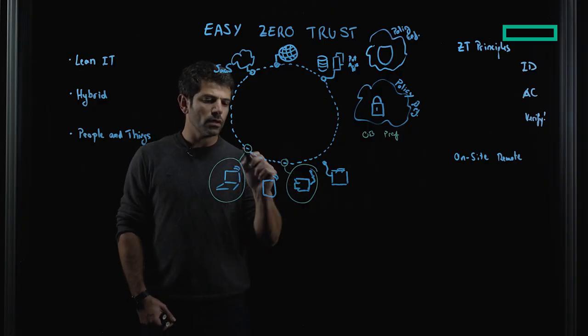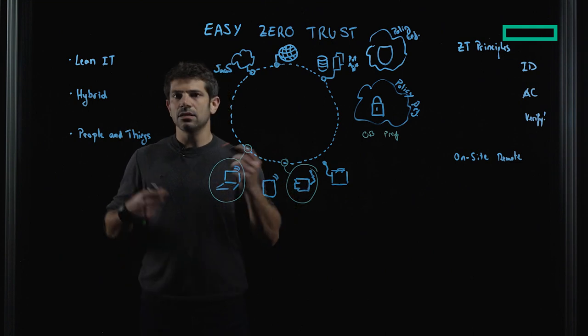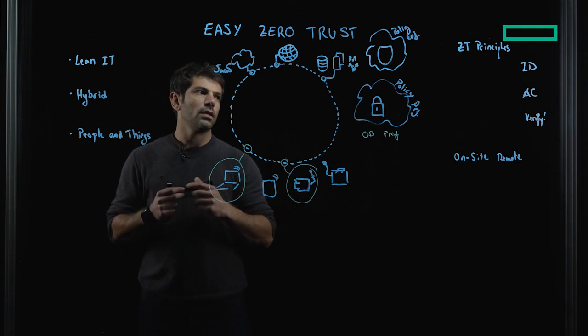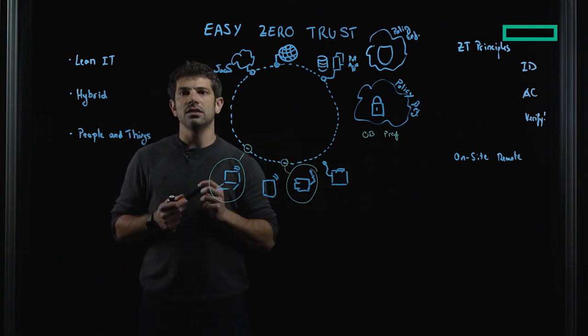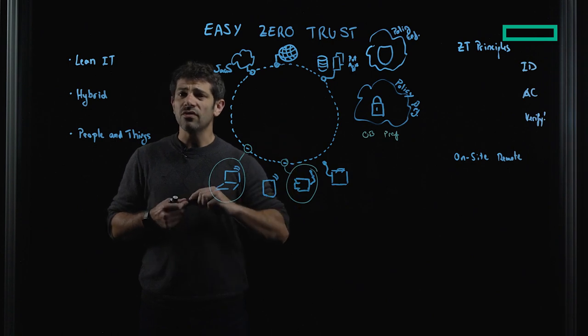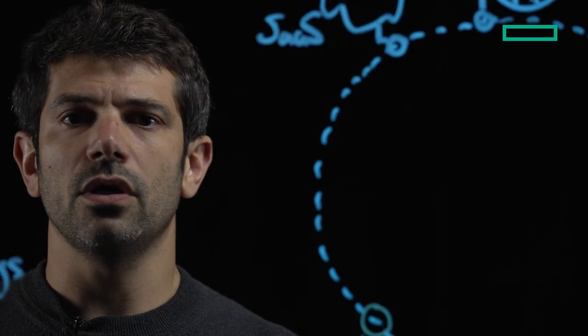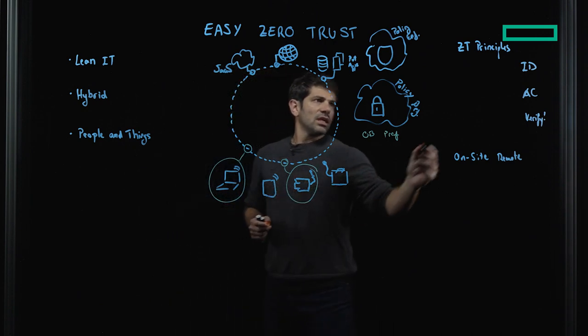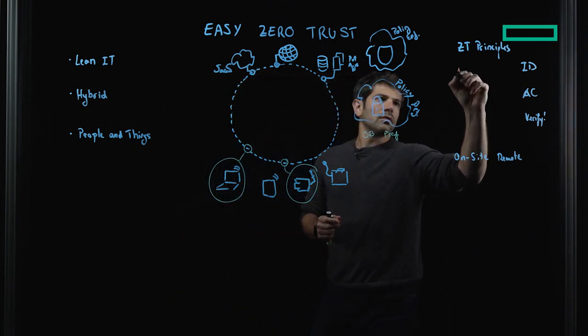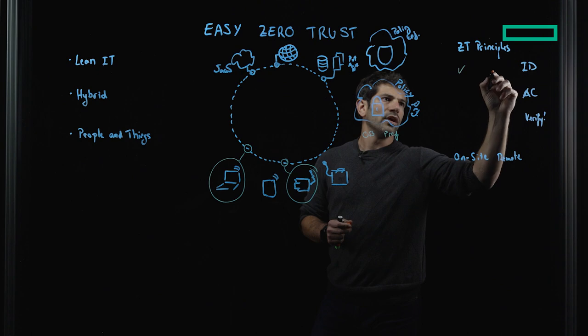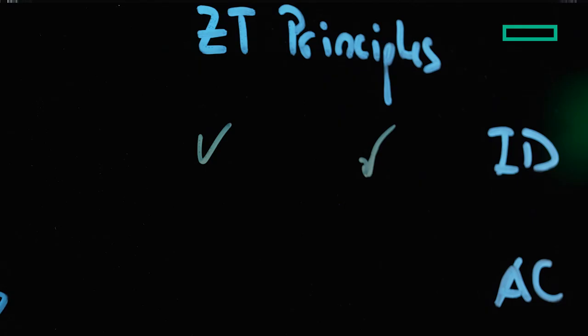So we have the user identified, we have the devices profiled. Next thing is, how are we going to control access to the application? In this case, this is pretty straightforward - we generally will integrate with an identity provider. So I think we can say that with CloudOff, with SSO, we have identity covered.